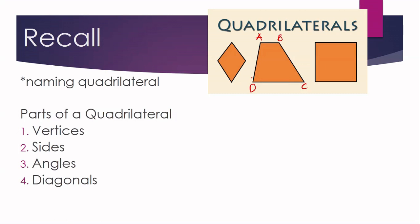If you are going to do it counterclockwise, this can be named as quadrilateral ADCB, DCBA, CBAD, or quadrilateral BADC.